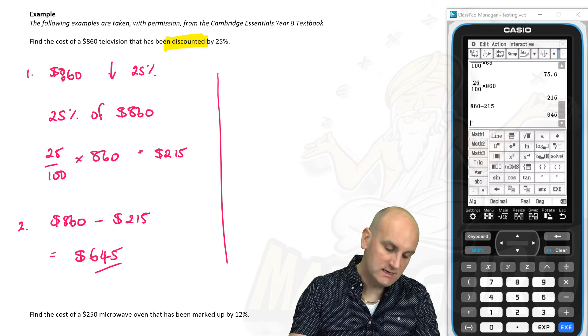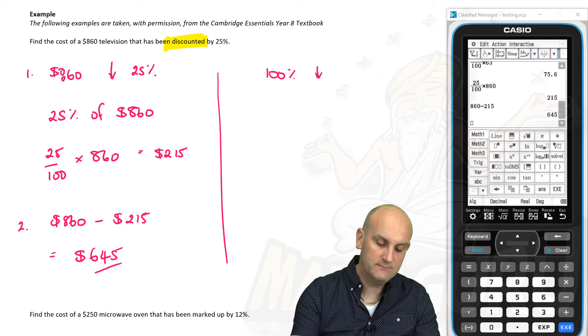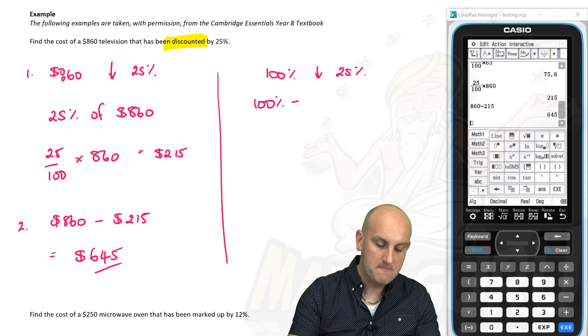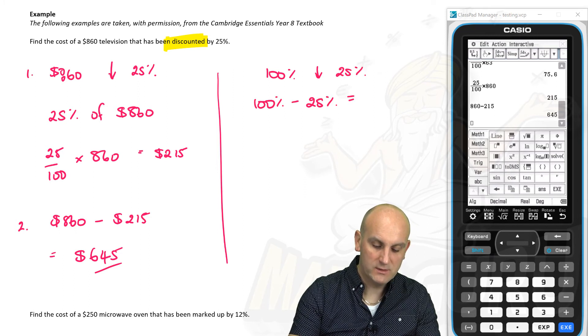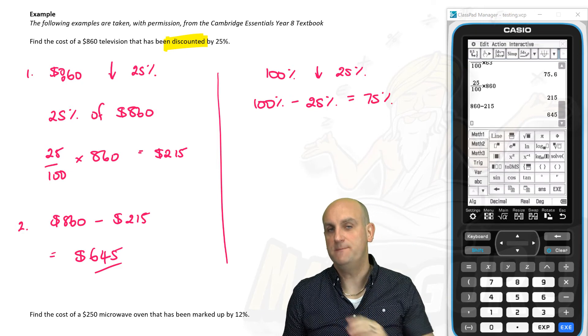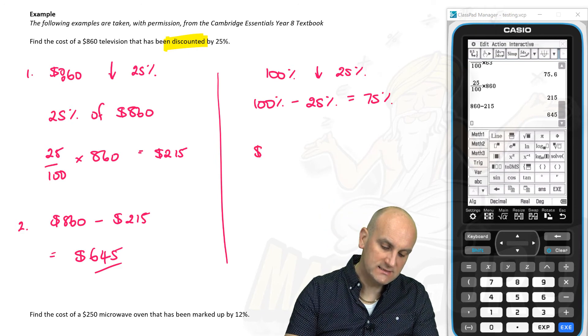Method two, same idea. So what do we start with? We start with 100%. We're discounting. So I'm going to do 100% minus 25%, which is going to give me 75%. So after I've done my calculation, I'm going to end up with 75% of what I started with.